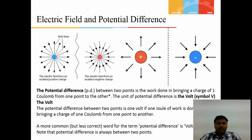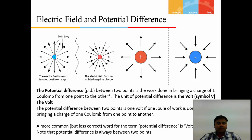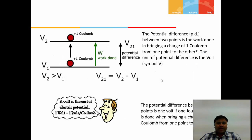The potential difference between two points is the work done in bringing one coulomb of charge from one point to another point, and its unit is the volt. Alternatively, the potential is the work done to bring a charge from an infinite distance to a particular point. One volt is defined as the difference between two points when one joule of work is done in bringing a charge of one coulomb from one point to another. One volt equals one joule per coulomb.